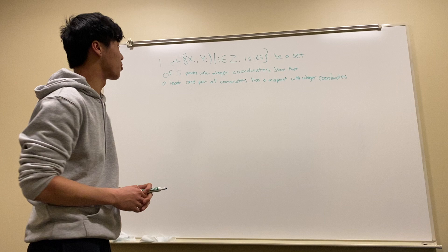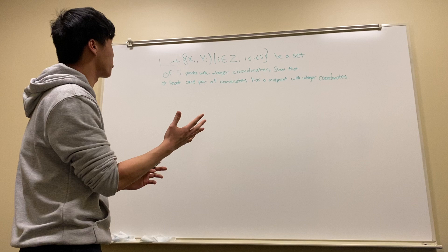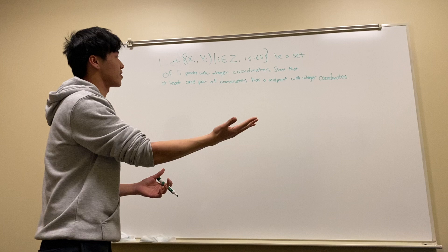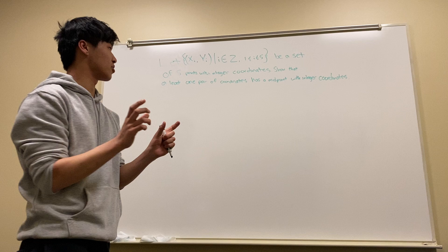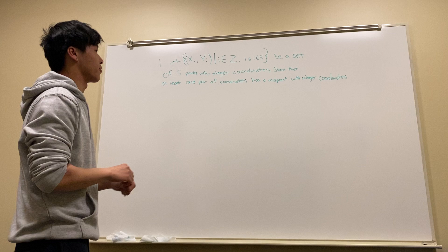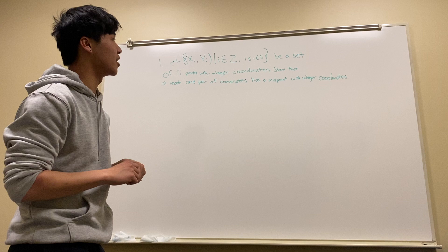For today we're going to be going over question 2 of homework 8. Taking a look at this question, we have a set of 5 points where i is an integer from 1 through 5. We have a set of 5 points that have integer values for the coordinate points, and we want to show that there are 2 points whose midpoint also has integer values. This question connects with the pigeonhole principle.